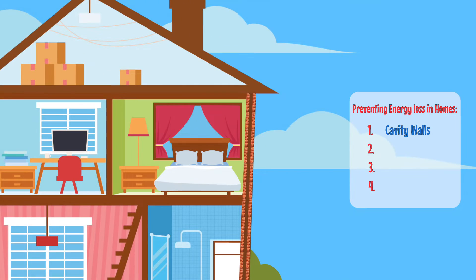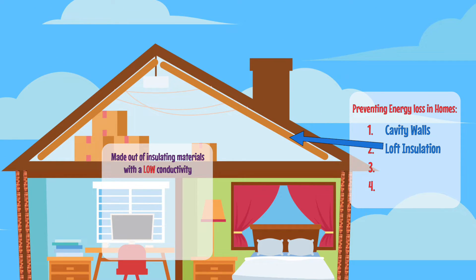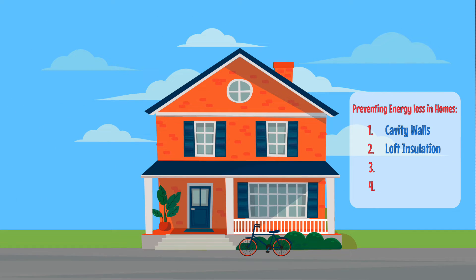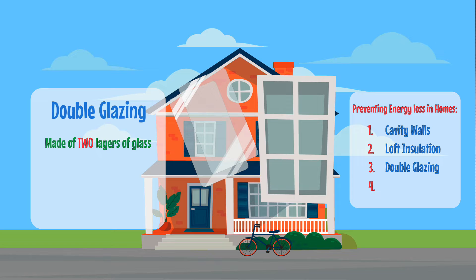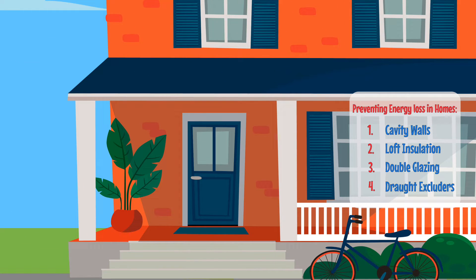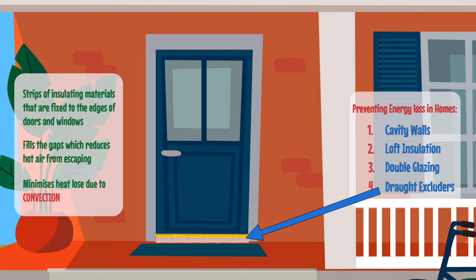To reduce heat losses even more, you can make the walls thicker to lower their overall thermal conductivity. The second way is installing loft insulation, made of materials with low conductivity, which reduces heat losses by conduction and convection by disrupting the convection current. The third example is installing double glazed windows, which work similarly to cavity walls — two sheets of glass with a layer of trapped gas in between, preventing heat losses by conduction and convection. The fourth example is installing draft excluders in doors and windows — strips of insulating material like rubber fixed to the edges — which reduces hot air from escaping and minimizes energy loss by convection.